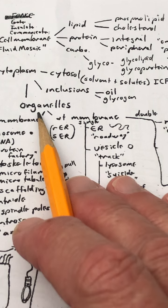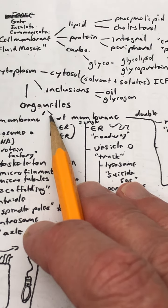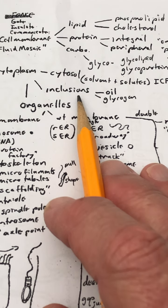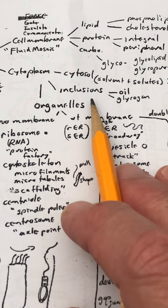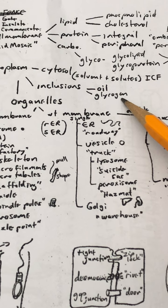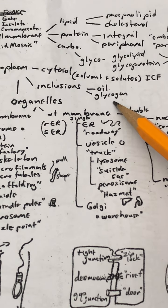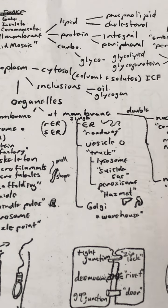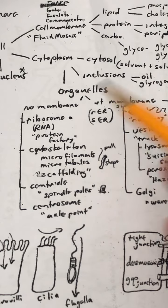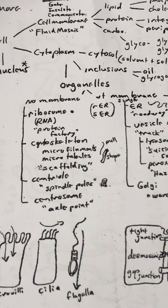There are also things called organelles, which are formed elements or structures that are distinctive. And then there are things that are inside the cytoplasm that just aren't that distinctive. They're changing in size and shape. They're not really well structured. These things are called inclusions. Inclusions generally include things such as oil droplets and glycogen crystals. Oil droplets inside adipose tissue and glycogen crystals in things such as liver cells.